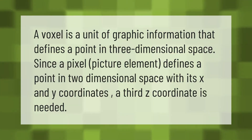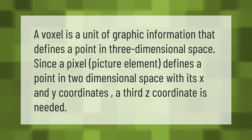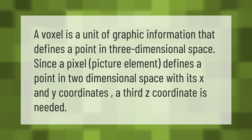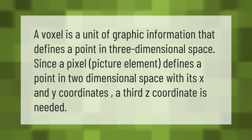A voxel is a unit of graphic information that defines a point in three-dimensional space. Since a pixel (picture element) defines a point in two-dimensional space with its x and y coordinates, a third z coordinate is needed for a voxel.